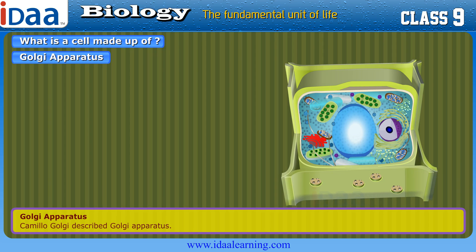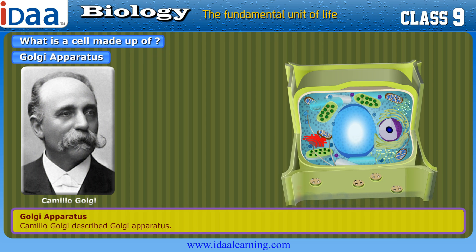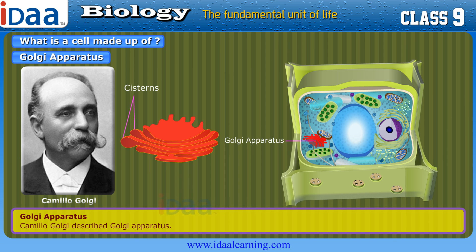Camillo Golgi described the Golgi apparatus, which consists of a system of membrane-bound vesicles arranged parallel to each other in stacks called cisterns. The membranes of the Golgi apparatus have connections with the membranes of the endoplasmic reticulum. They also help in the formation of lysosomes.